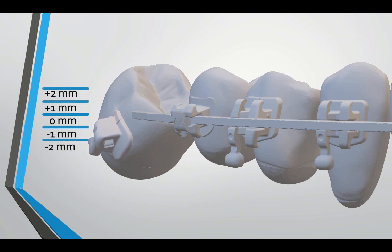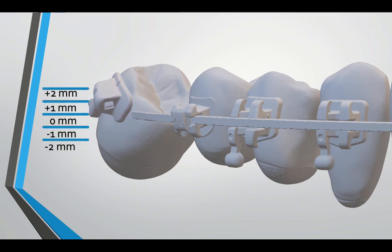Again, this aimed to simulate a clinical attempt to produce an intrusive force on the second molar in order to prevent its extrusion during uprighting by bonding the molar tube more occlusally.